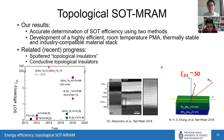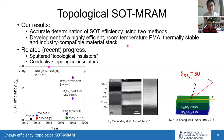Is the bismuth selenide polycrystalline? Yes, it is — these are sputtered topological insulators. It seems that crystallinity doesn't matter much for the topological properties, though this remains to be fully explored.